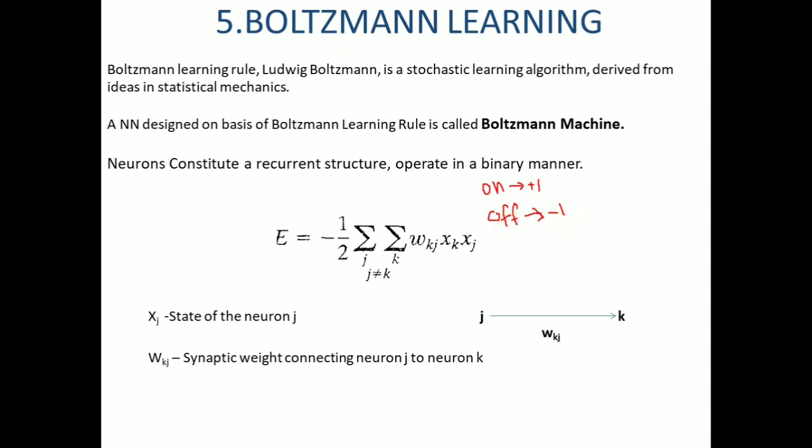The Boltzmann machine is characterized by an energy function E given by E equals minus 1/2 sigma iterated over j and sigma iterated over k, w_kj x_k x_j, where j is not equal to k.